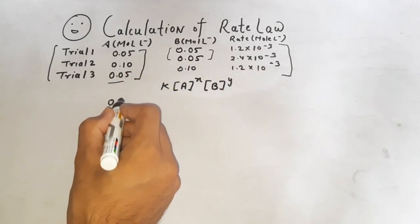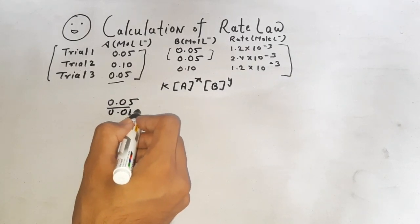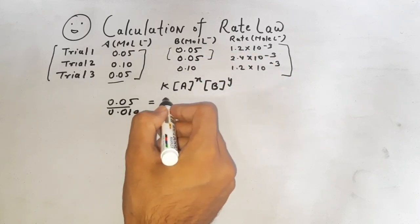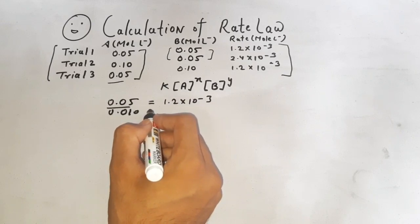The value of a is 0.05 and 0.010, and equals to 1.2 into 10 to the power of minus 3 and 2.4 times 10 to the power of minus 3.